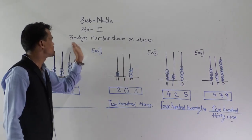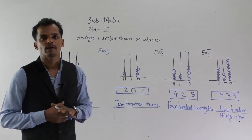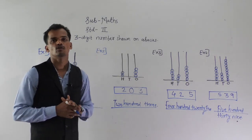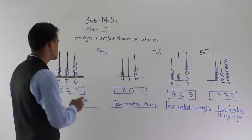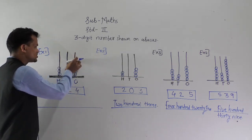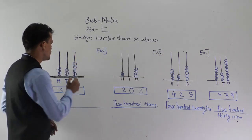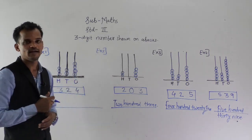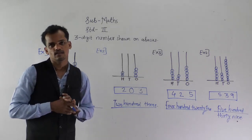Today we have learned how to show a three digit number on the abacus. Remember that the abacus is a mathematical instrument on which we can show any number. To show a three digit number, the abacus should have three spikes, starting from the extreme right: ones place, tens place, and hundreds place. Each spike shows the position of the digit, and the beads show how many ones, tens, and hundreds there are. Count the beads and read the number. Thank you.